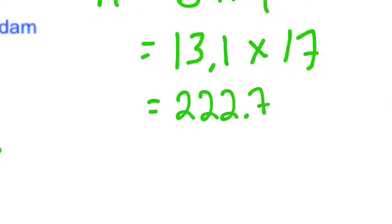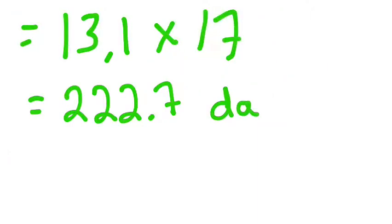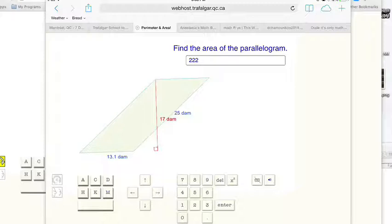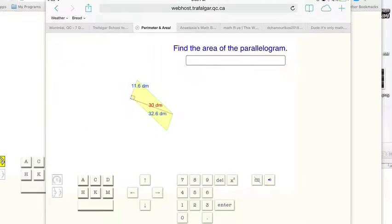Now the units are decameters. So decameters squared. Don't forget the squared. Alright, so back to our program. So 222.7 decameters squared. And there we go.